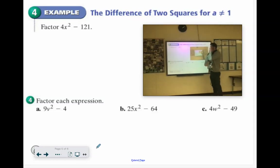Let's see, there's two terms. Can I square root them both? Square root of 4x squared is 2x. Okay. Square root of 121 is 11.